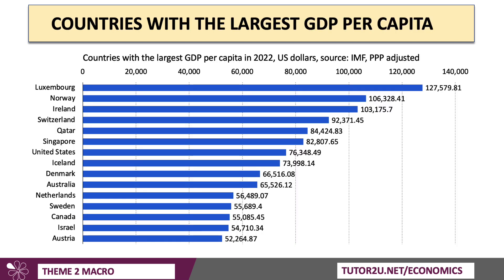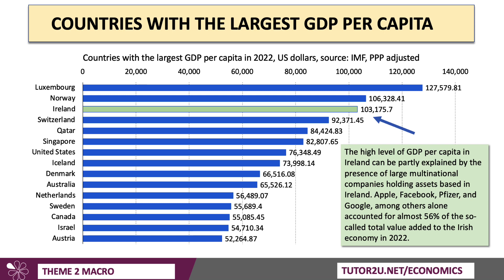These are the countries in 2022 with the largest GDP per capita, measured in dollars and adjusted for purchasing power parity. Luxembourg is well out in top, then Norway, and Ireland came pretty high as well. This very high level of income per capita in Ireland can be partly explained by the significant presence of a large cluster of multinational businesses that hold assets and production in Ireland. The likes of Apple, Facebook, the pharmaceutical giant Pfizer, and Google accounted for over half of the total value added to the Irish economy in 2022.